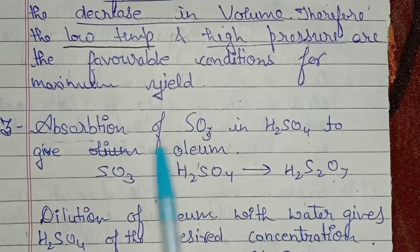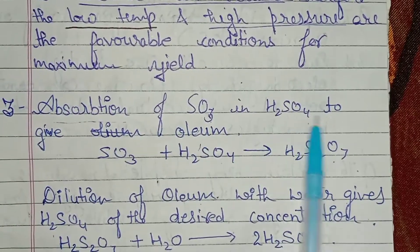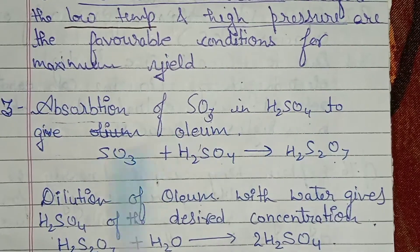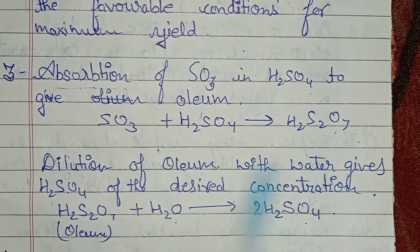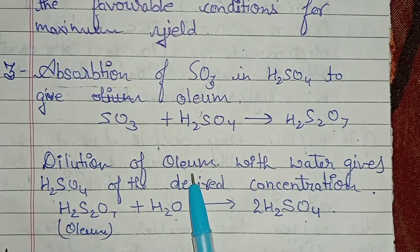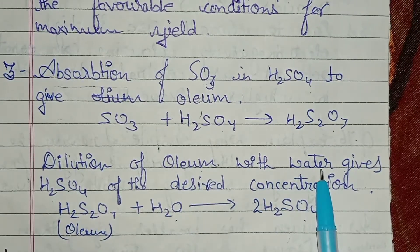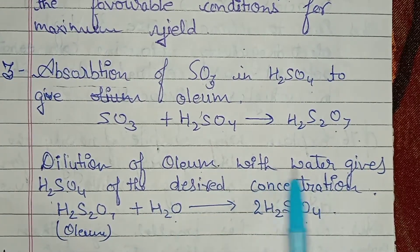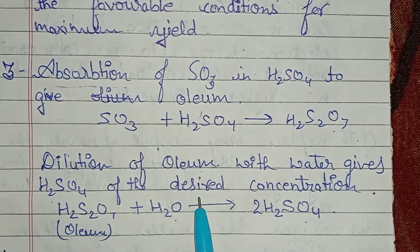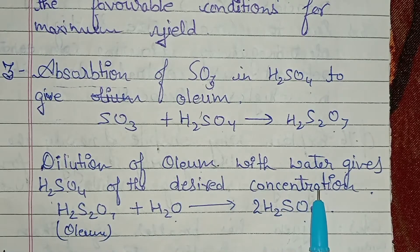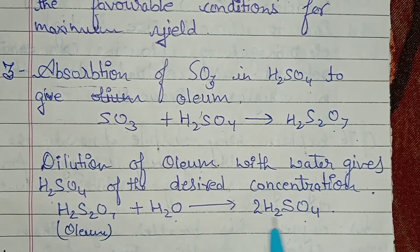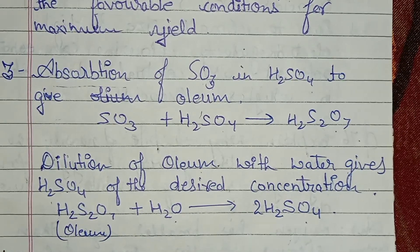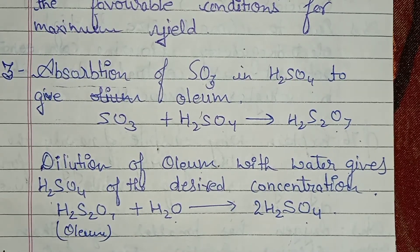Step three is the absorption of SO₃ in H₂SO₄ to give oleum: SO₃ + H₂SO₄ → H₂S₂O₇. Dilution of oleum with water gives the desired concentration of H₂SO₄.